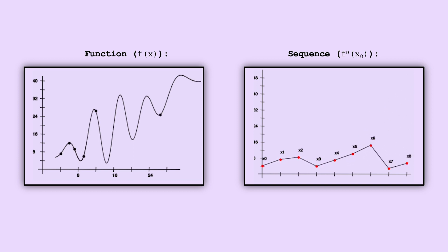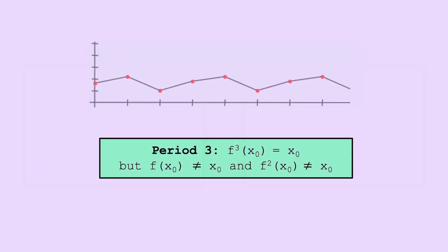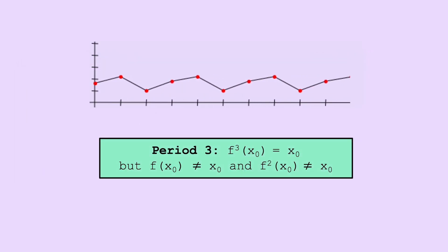Of course, these recursive sequences can behave in all sorts of ways. But one intriguing feature such a sequence can have is periodicity. Say, for instance, we have a point with period 3, meaning the sequence repeats every three entries so that f cubed of x0 is equal to x0. But it doesn't repeat with less than three iterations. The sequence generated by such a point is x0, x1, x2, x0, and so on.